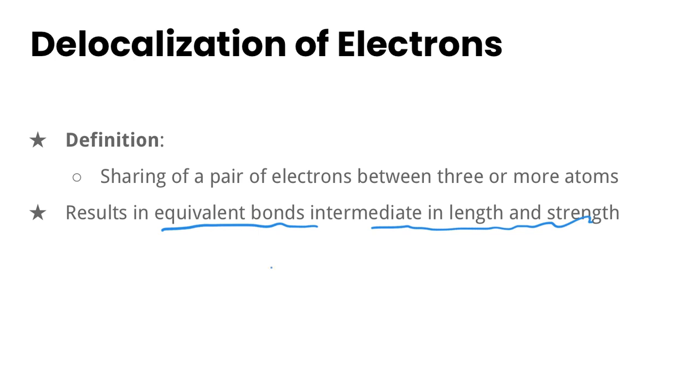So for our nitrate example instead of having one shorter bond and two longer bonds we actually have three bonds that are all the same strength and they're in between a single and double bond and they're all the same length but they're in between a single and a double bond.